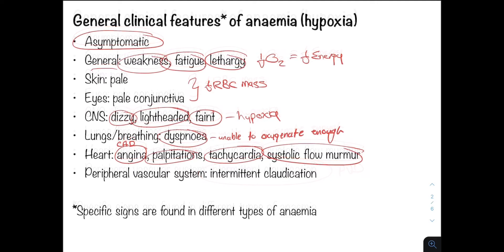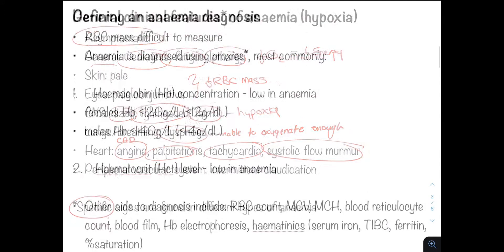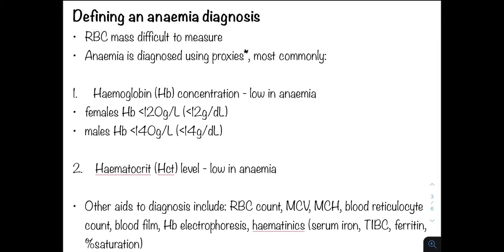We shall discuss specific signs and symptoms in the various types of anemia, but this is just an overview of the general clinical features. In an ideal world, making a diagnosis of anemia would require measuring the red cell mass. However, this is difficult, so we use proxies. Most commonly we use the haemoglobin concentration and the haematocrit level, and out of the two, we use haemoglobin to define anemia.